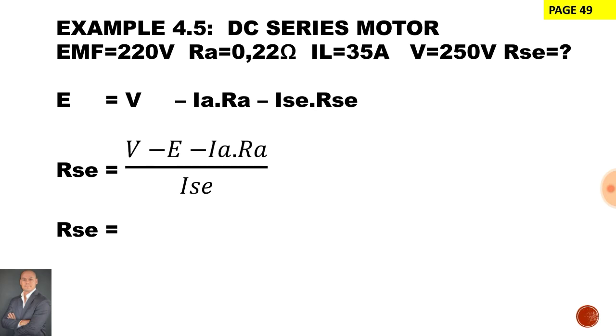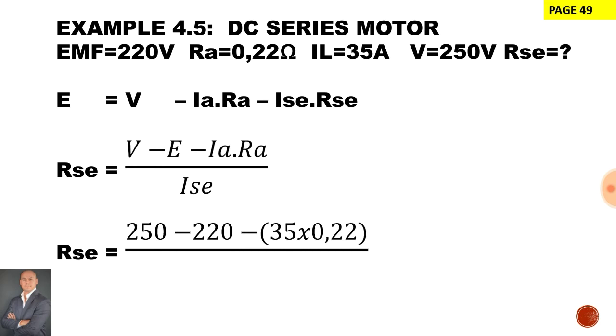Now to calculate the value of the series winding. The terminal voltage is 250 volts. The generated EMF is 220 and to calculate the volt drop we'll use Ohm's law, I times R. The current in the circuit is 35 and the armature resistance is 0.22 ohms.